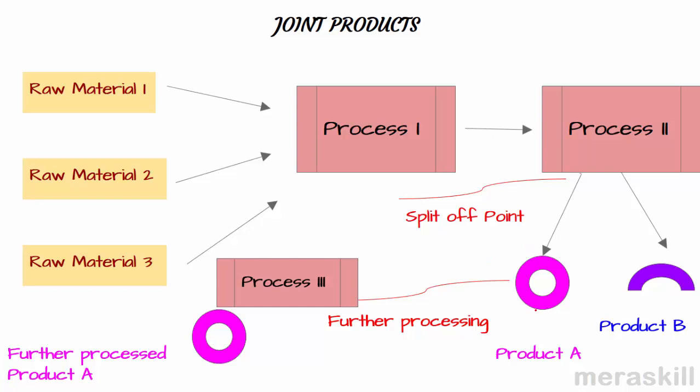Once the joint products are there, they may be sold at split-off point. If there is a market at split-off point, they can be sold there. Or, if there is no market at the split-off point, they have to be processed further and then they would be sold. Of course this further process,